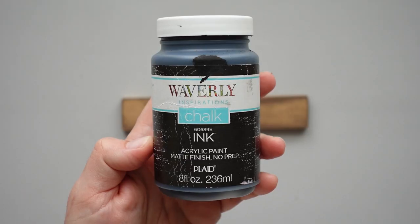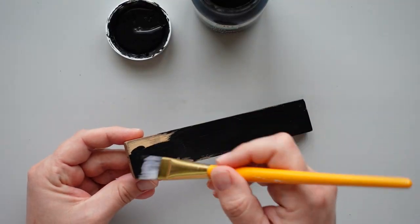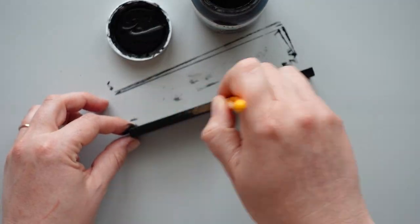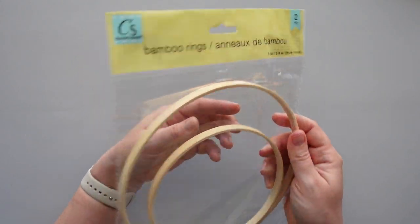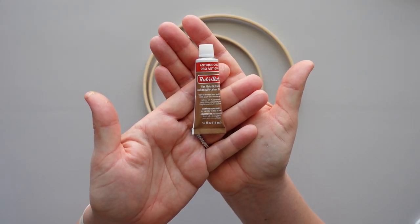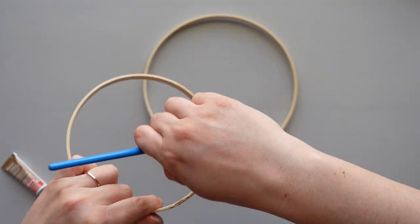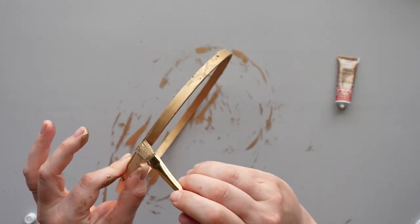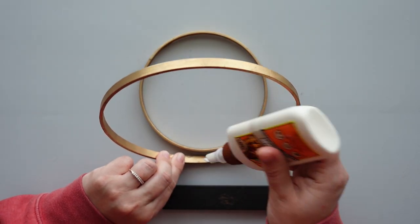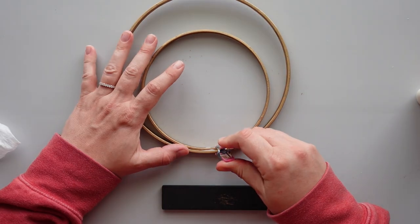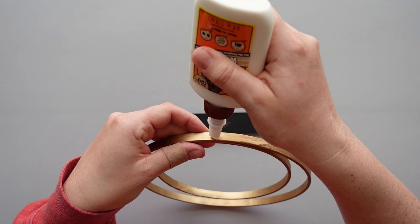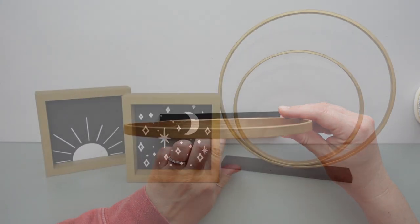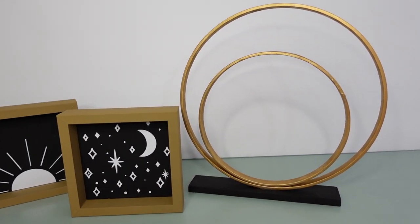For this final DIY, I started out with a small piece of wood I found in my stash. I gave it a coat of black chalk paint and set it aside to dry. Next, I grabbed this pack of bamboo rings from Dollar Tree. I gave both of the rings a coat of antique gold rub and buff that I recently picked up at Michael's. Once the rings were dry, I used wood glue to attach them together. After that glue dried, I used more wood glue to attach the rings to the piece of wood I painted black earlier, and that was it for this simple decor piece. My daughter really liked the way this one turned out.